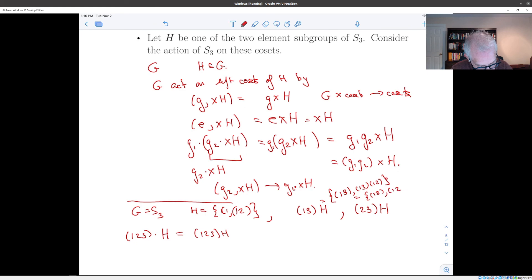And then here this is 1 goes to 2, 2 goes to 1, goes to 3. And this one is (2, 3). And then (2, 3) times (1, 2), which is (1, 2, 3). So (1, 2, 3)H is the same as (1, 3)H.